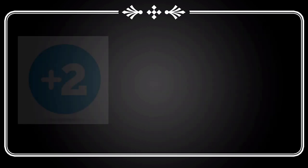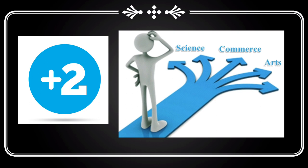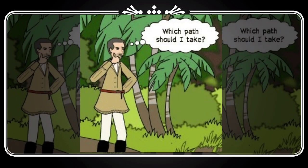एक example दे रहा हूँ — अगर आपको plus two में कोई subject choose करने का मौका मिले, science हो या commerce हो या arts हो, तो आपको एक ही choose करना पड़ेगा। ऐसा नहीं कि science भी choose कर लो, arts भी, commerce भी — ऐसा नहीं हो सकता। तो poet के साथ भी कुछ ऐसा ही हुआ है — उसको एक option choose करना पड़ेगा। Poet बहुत देर तक सोचता है, रुकता है, दोनों को weigh करता है कि किसमें ज़्यादा challenges हैं, फिर at last एक conclusion पर पहुँचता है।